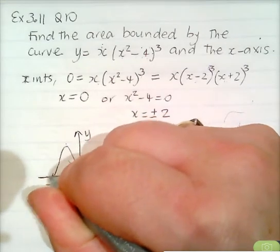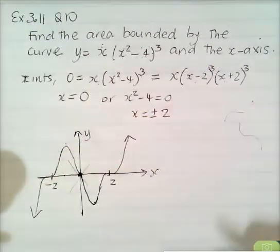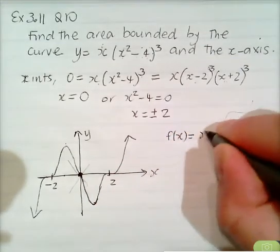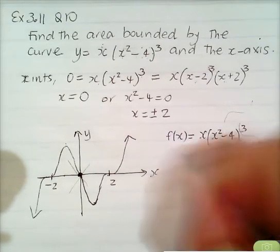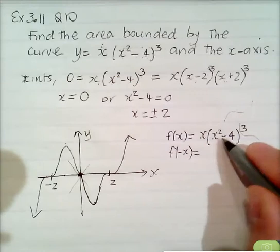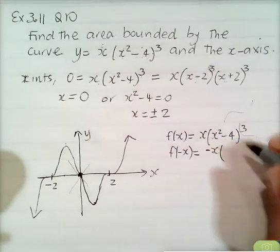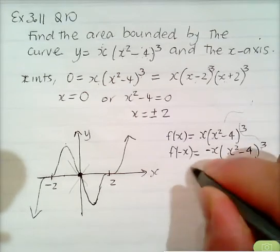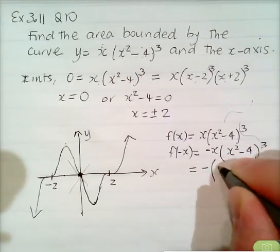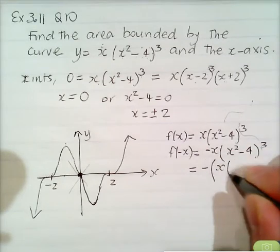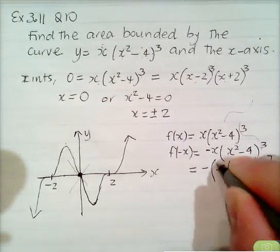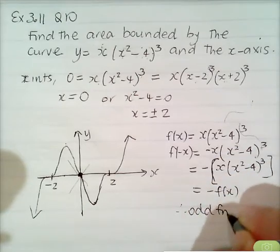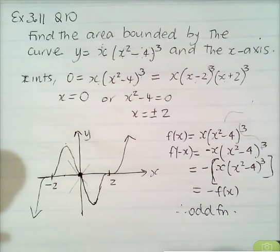Checking whether it's an odd function: f(x) equals x times x squared minus 4 cubed. Then f(negative x) gives negative x times negative x squared minus 4 to the power 3. Since negative x squared equals x squared, this simplifies to negative x times x squared minus 4 cubed, which is negative f(x). So this is also an odd function.